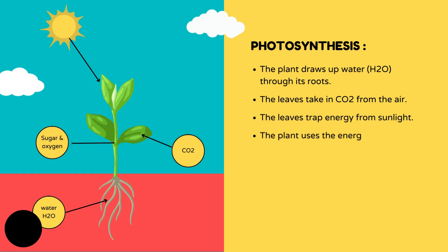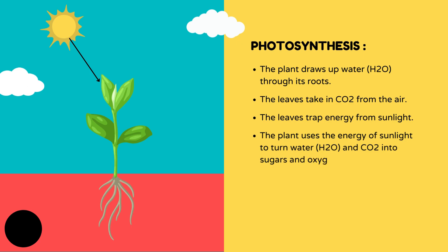The plant uses the energy of sunlight to turn water and carbon dioxide into sugars and oxygen.